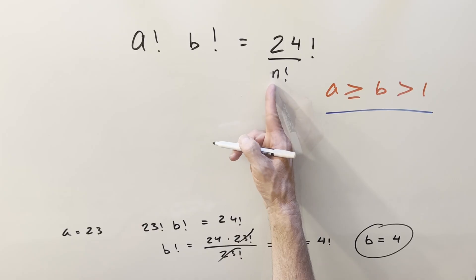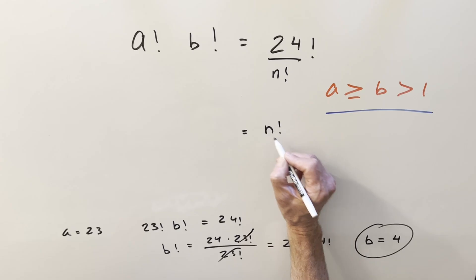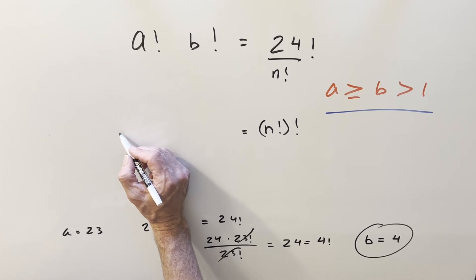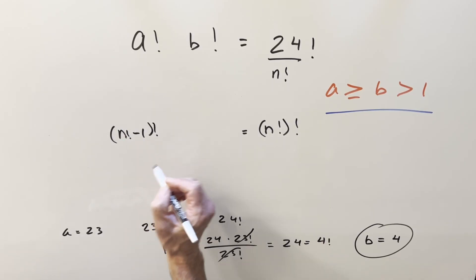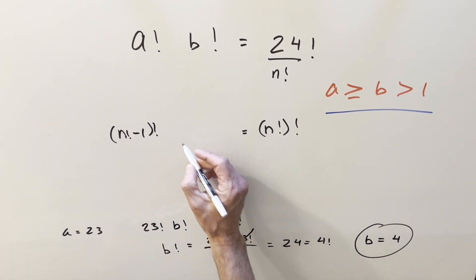So like let's say, so let's call 24 n factorial, where in this case it was 4. So on the right side of the equation we have something like n factorial factorial. Then the a value, we had that in the form of n factorial minus 1 factorial, right? That gave us the 23 factorial. And so this piece right here, the b value was just n factorial.